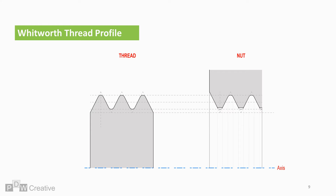The BSW thread profile is different to the unified series profile. It consists of an internal and external component. The internal part is the nut and the external the screw or bolt. The major diameter or radius — for the benefit of this cross section — is the largest thread diameter or radius. The peak is known as the crest of the thread.